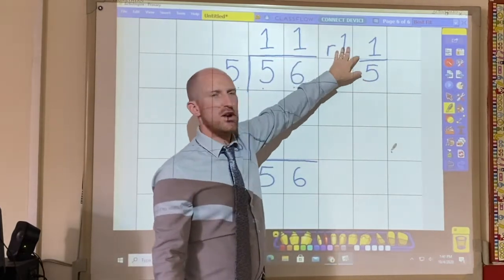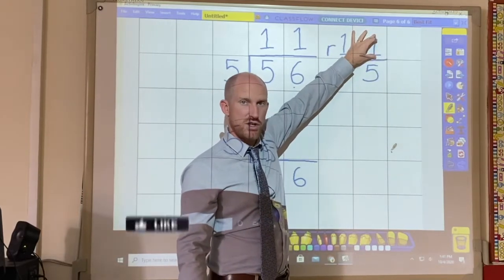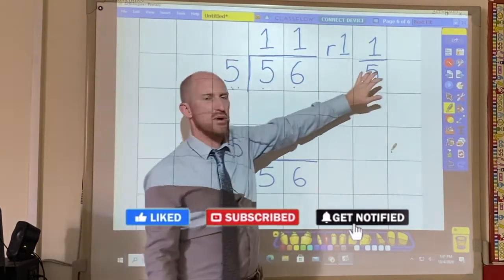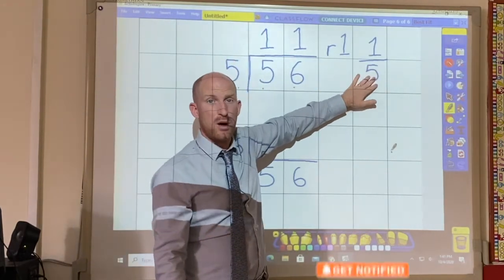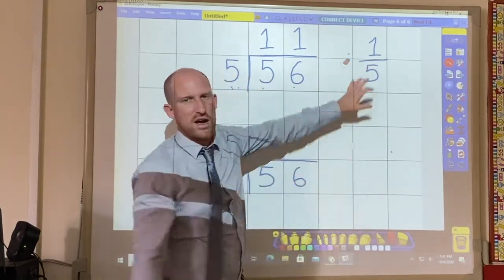So whatever the remainder is you put at the top of the fraction as the numerator and then whatever the dividing number is you put at the bottom as the denominator and then that makes up your fraction.